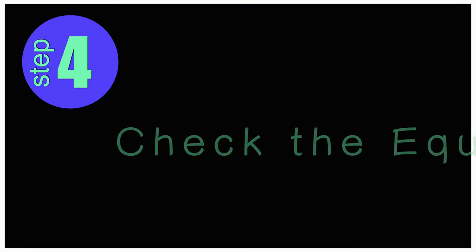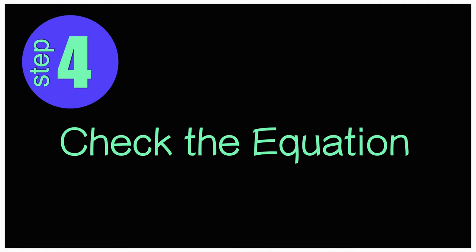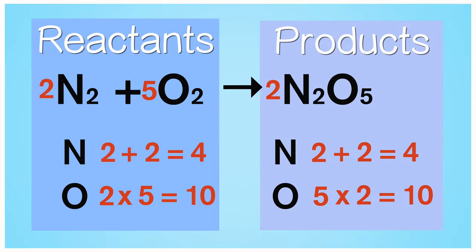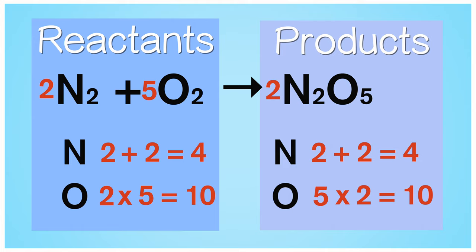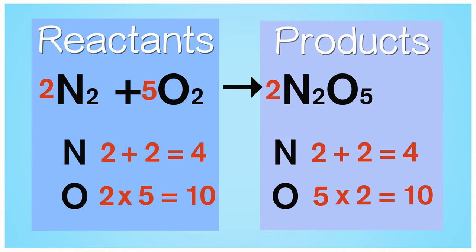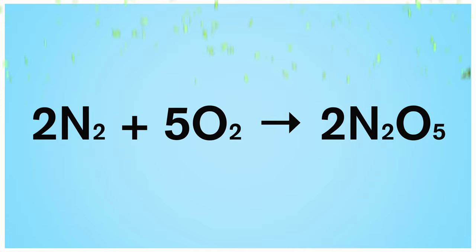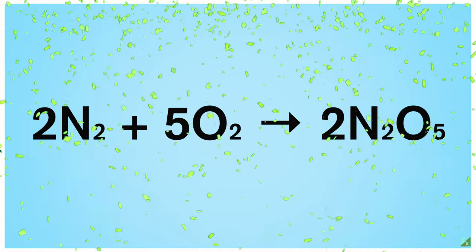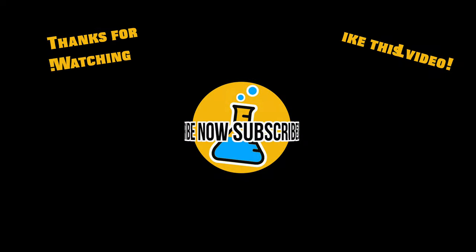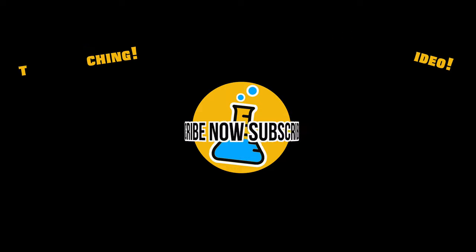Step 4: Now let's check the equation. As a final step, we have to make sure that the number of atoms on both the reactant side and the product side are equal to each other. This is very important. There are 4 nitrogen atoms on both sides. Also, there are 10 oxygen atoms on both sides. That's it — now you know how to balance chemical equations. Thank you for watching!